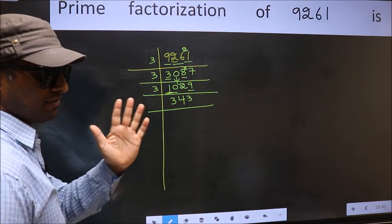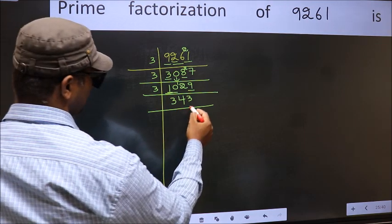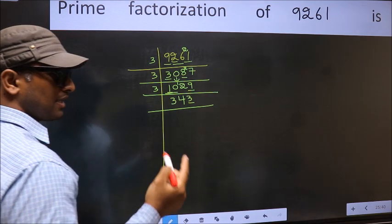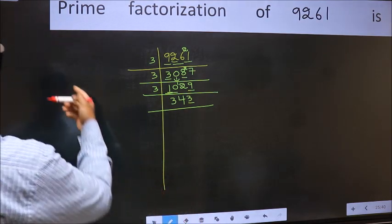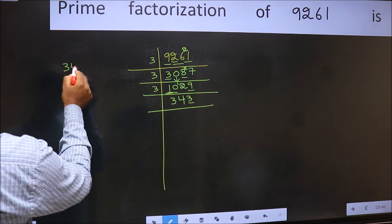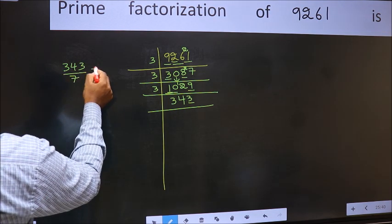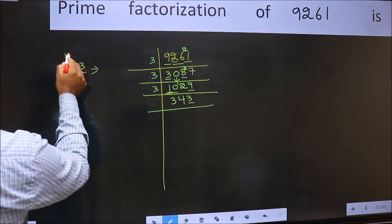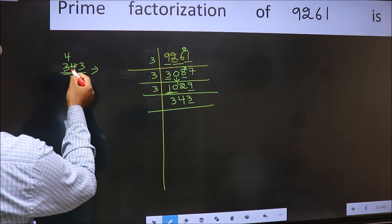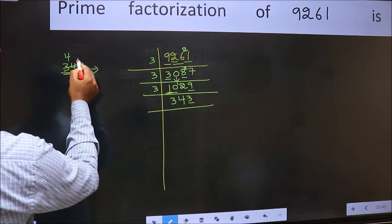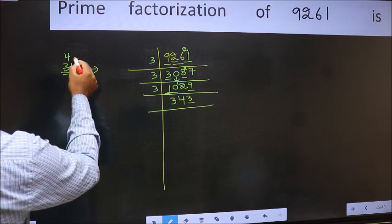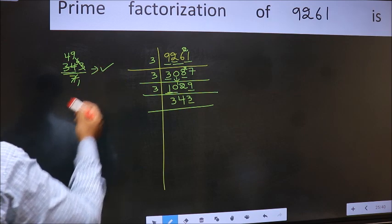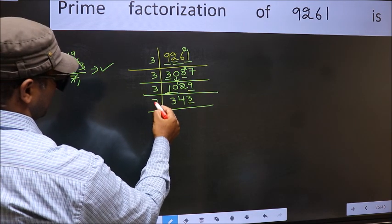Next prime number is 5. The last digit is neither 0 nor 5, so 343 is not divisible by 5. Next prime number is 7. Let us check divisibility by 7. A number close to 34 in the 7 table is 7 times 4 = 28. 34 minus 28 is 6, carry forward: 63. When do we get 63 in the 7 table? 7 times 9 is 63. No number is left out, so 343 is divisible by 7.